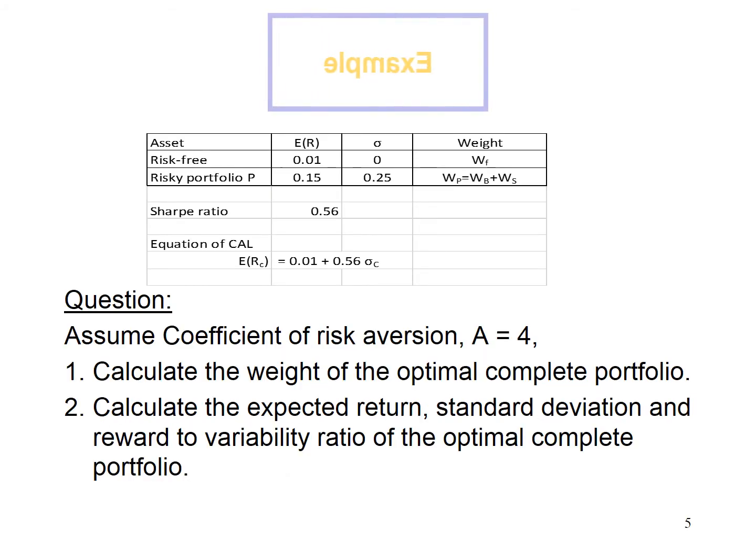Let's take a look at an example. Here we have two types of assets: risk-free asset and risky portfolio P. Earlier in one of my videos, I have shown you how to compute the equation of the capital allocation line. Therefore, I would not repeat here. I have put the equation of the capital allocation line for your reference. Assuming investor has a risk aversion of 4, our objective is to find out how much is the weight to invest in risky portfolio P and risk-free asset in order to form an optimal complete portfolio that maximizes the utility of investors.